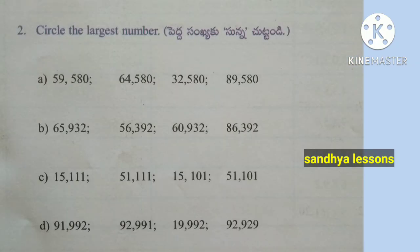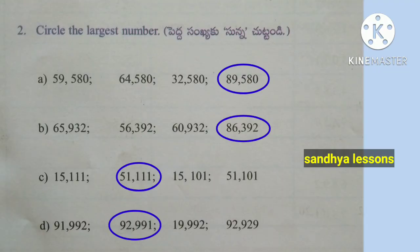Second question: circle the largest number. Largest number from group A is 89,580. Largest number from group B is 86,392. Largest number from group C is 51,111. Largest number from group D is 92,991.